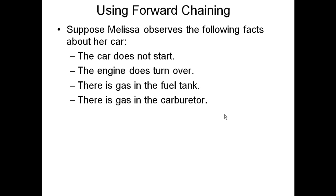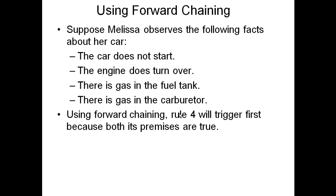Let's see how we can use this rule base doing both forward chaining and backward chaining, using forward chaining first. Suppose Melissa goes out and observes these facts about her car: it won't start, the engine does not turn over, there's gas in the fuel tank, and she even checks and sees there's gas in the carburetor. Using forward chaining, if you cycle through the rules, the first rule that has all its premises true is rule four.